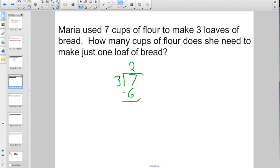There is no such thing as two remainder one cups of flour. You have one left over, so that's your numerator. You are dividing by three. Three, that is your divisor, so it's also your denominator. Two and one-third cups to make just one loaf of bread.